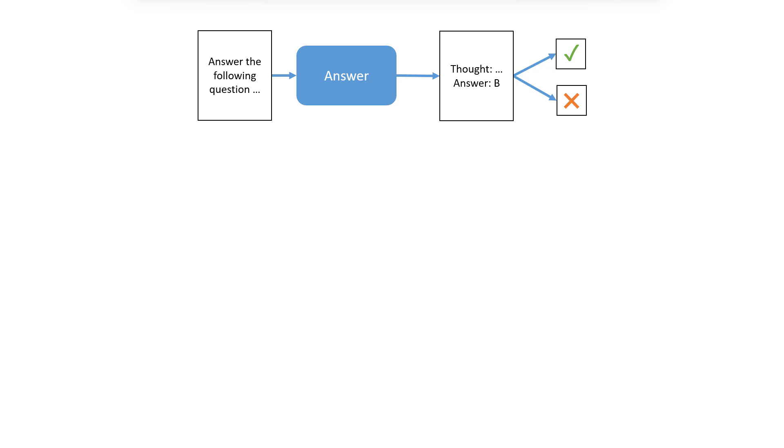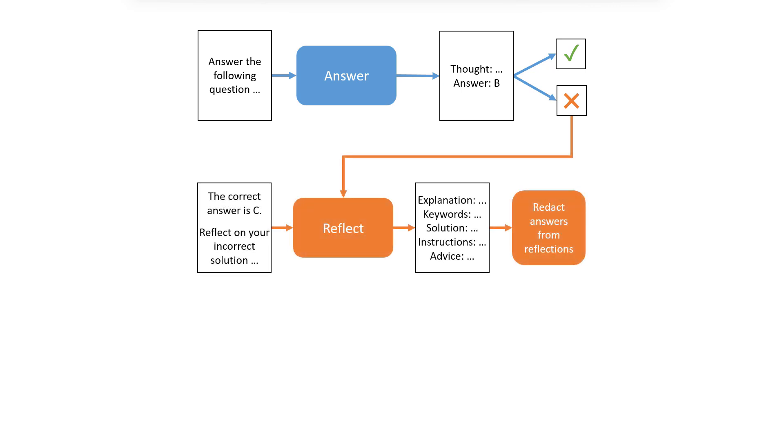First, we had the LLM answer the multiple-choice question. It used a chain of thought to reason step-by-step through its solution. Second, if the LLM answered the question incorrectly, we instructed it to reflect on its incorrect solution. The LLM generated 8 types of self-reflections to capture why it made the error and how to fix it.